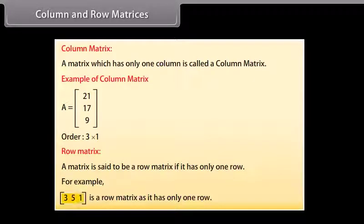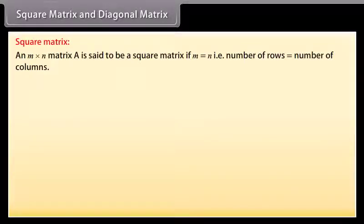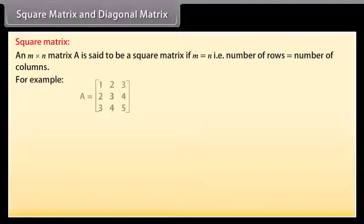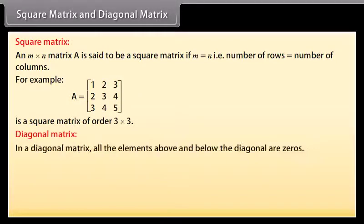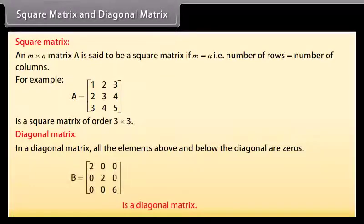An M by N matrix A is said to be a square matrix if M is equal to N, that is, the number of rows equals the number of columns. For example, A is a square matrix of order 3 by 3. In a diagonal matrix, all elements above and below the diagonal are zeros. For example, B is a diagonal matrix.